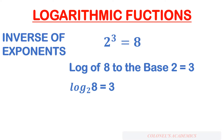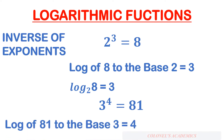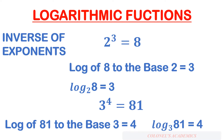It is written like this: log of 8 to the base 2 will be equal to 3. Let us take another example: 3 to the power of 4 is equal to 81. That means if you multiply 3 four times, what we get is 81. This is in exponential form. Converting this into log form, the log of 81 to the base 3 will be equal to 4. You should always keep this in mind while solving logarithmic functions.